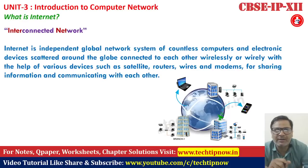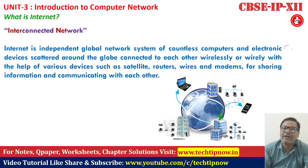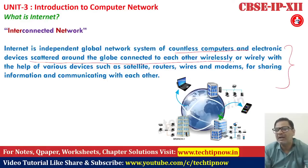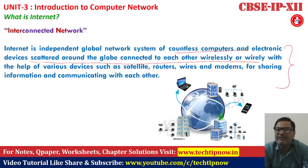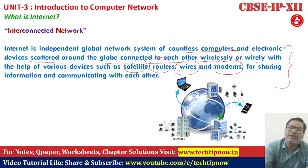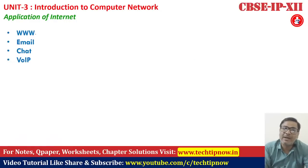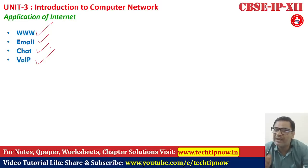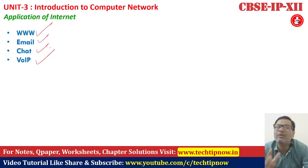Now what is internet? Internet is a wide area network — an interconnected network. It is a network system of countless computers and electronic devices scattered around the globe, connected to each other either wirelessly or via wired mediums across the globe. Satellites, routers, wires, and modems are all used. Applications of internet include: WWW, email, chat, and VoIP — Voice over Internet Protocol.